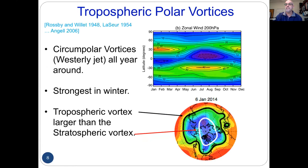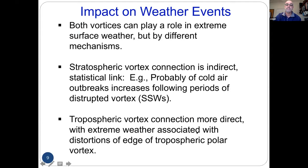The tropospheric polar vortex — or the jet stream or mid-latitude jets — exists all year round but is still stronger in the Northern Hemisphere. The black contour shows the edge of the tropospheric vortex, and the white shows the stratospheric vortex. This is where you start to see the possible connection to weather events. One confusion was these two different polar vortices; the second is that they both can play a role in extreme surface weather events, but the mechanism is different.